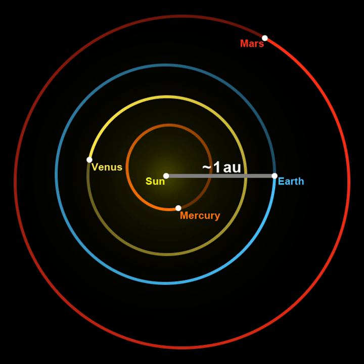The astronomical unit is a unit of length, roughly the distance from Earth to the Sun. However, that distance varies as Earth orbits the Sun, from a maximum to a minimum and back again once a year. Originally conceived as the average of Earth's aphelion and perihelion, since 2012 it has been defined as exactly 149,597,870,700 m, or about 150 million kilometres.